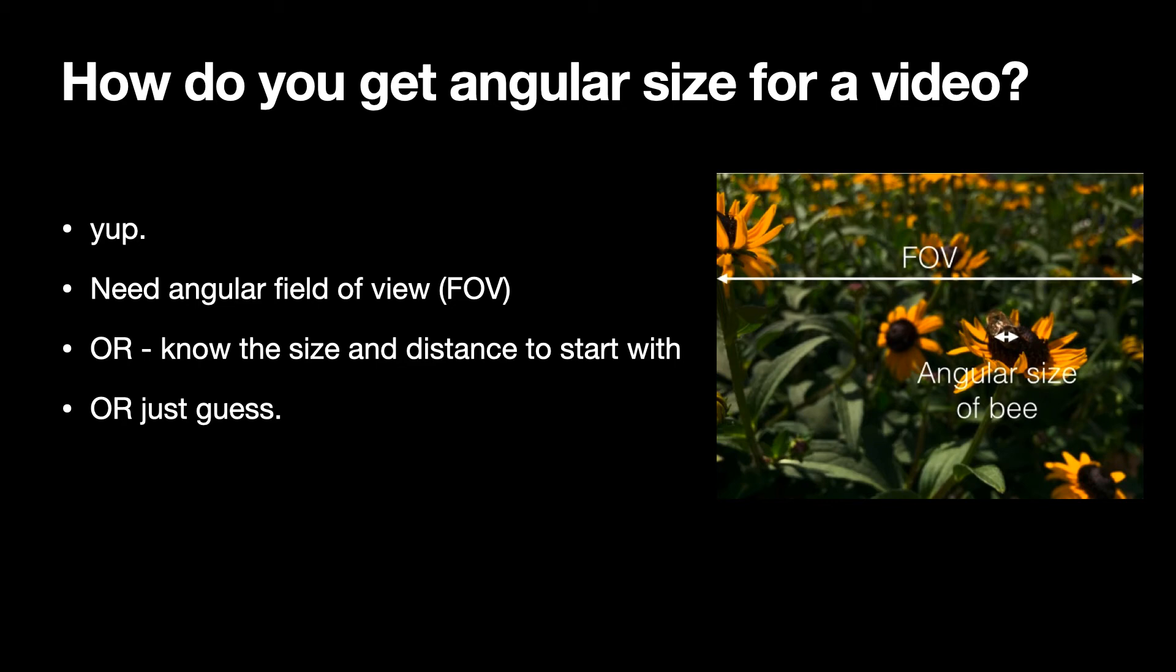But I don't know the angular field of view of this camera. And I don't know if they were zoomed in or not. So you'd have to know all that stuff, which I don't know. Or I could just say, okay, I know how far away that object is. And I know how big it is. I can calculate the angular field of view. And then from that, I can just keep going.